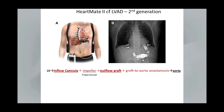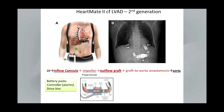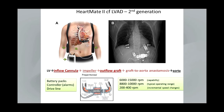This second-generation device also has the traditional battery packs and a controller, which is connected to the impeller, supplies power, receives data from the device, and generates alarms. The second-generation HeartMate II is an axial flow pump based on the Archimedes principle, capable of operating in the 6,000 to 15,000 RPM range, but the practical operating range is 8,800 to 10,000 RPM. For changing speeds, this is done in increments of usually 200, sometimes 400 RPM.